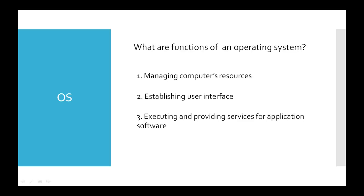The second function of an operating system is to establish a user interface. The user interface sits as a layer above the operating system. It is the part of the application through which the user interacts with the application. Some operating systems, such as Microsoft Windows and Apple Macintosh, use graphical user interfaces. Other operating systems, such as Unix, use shells.